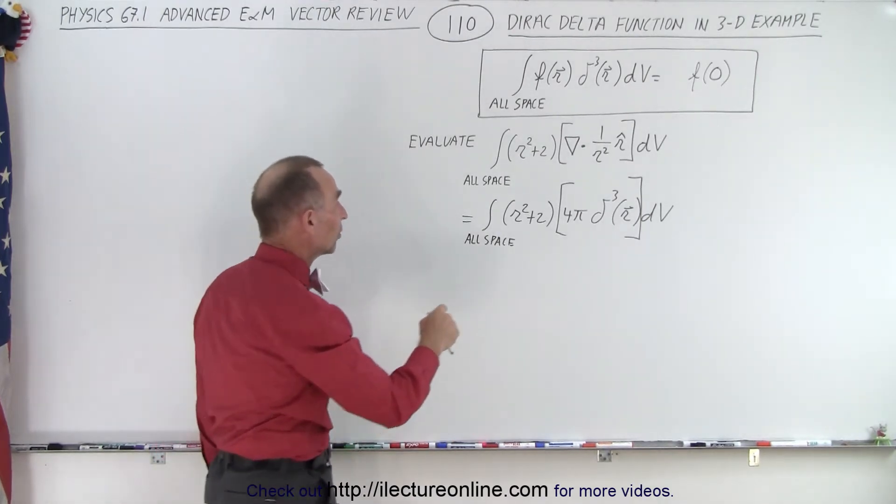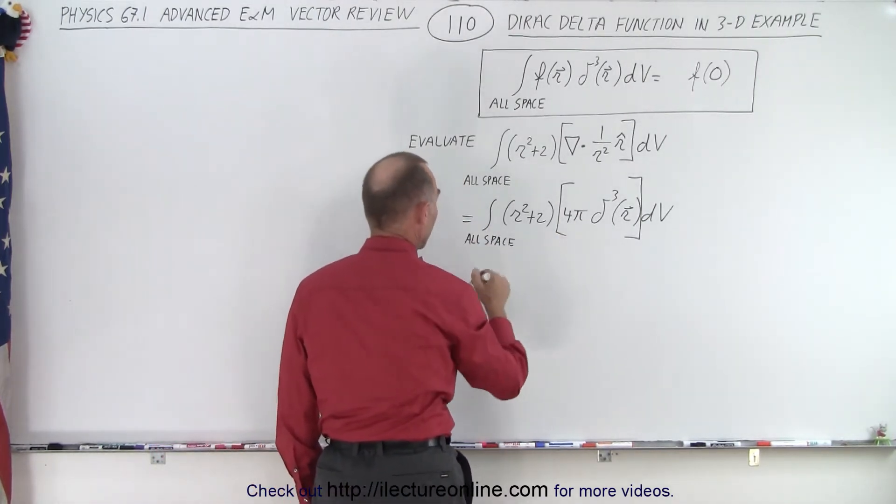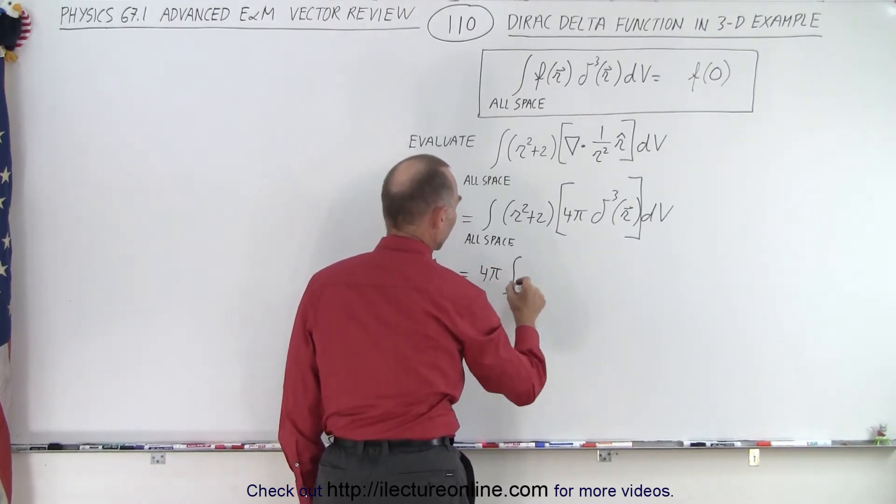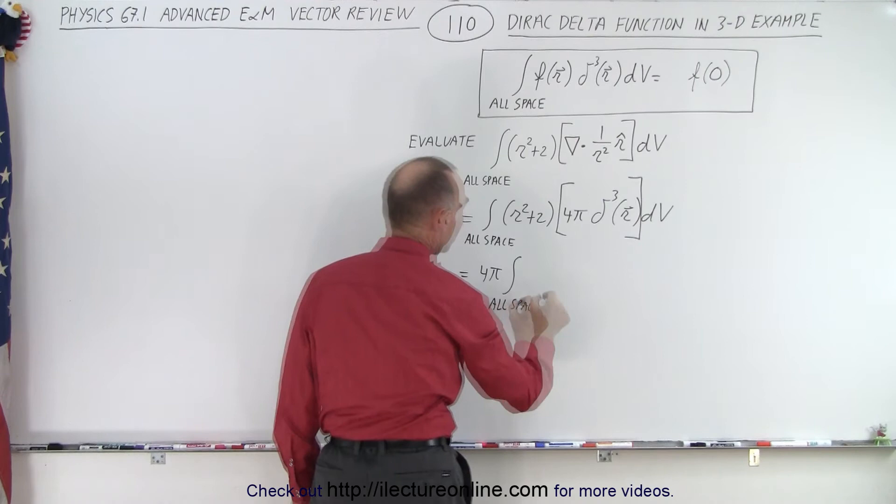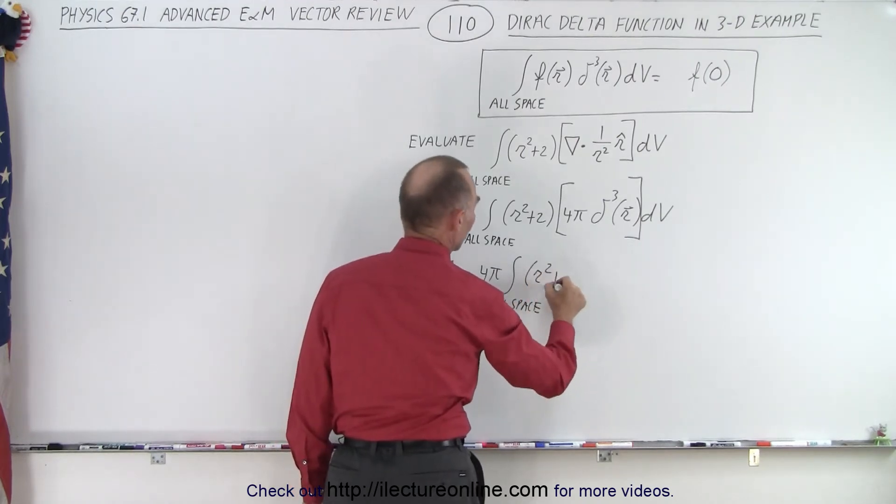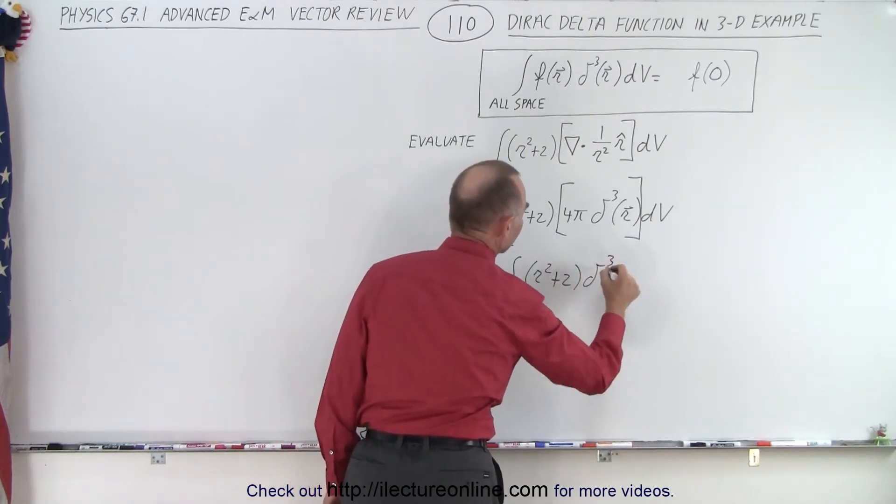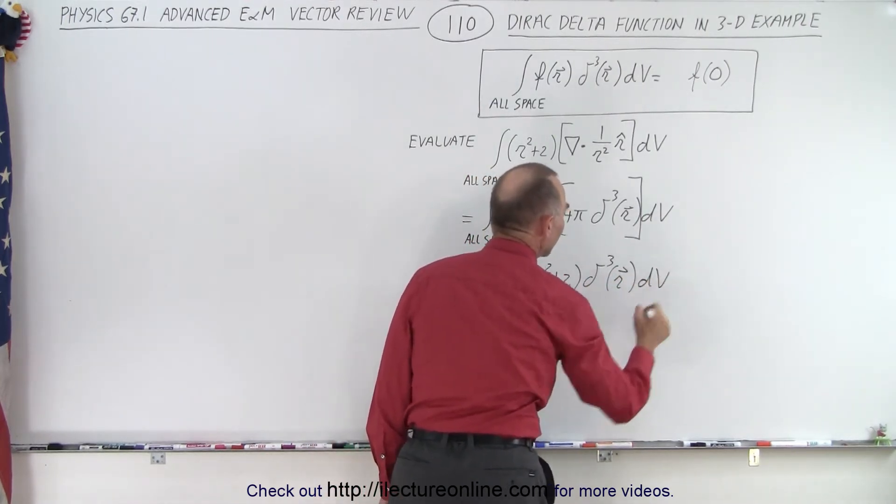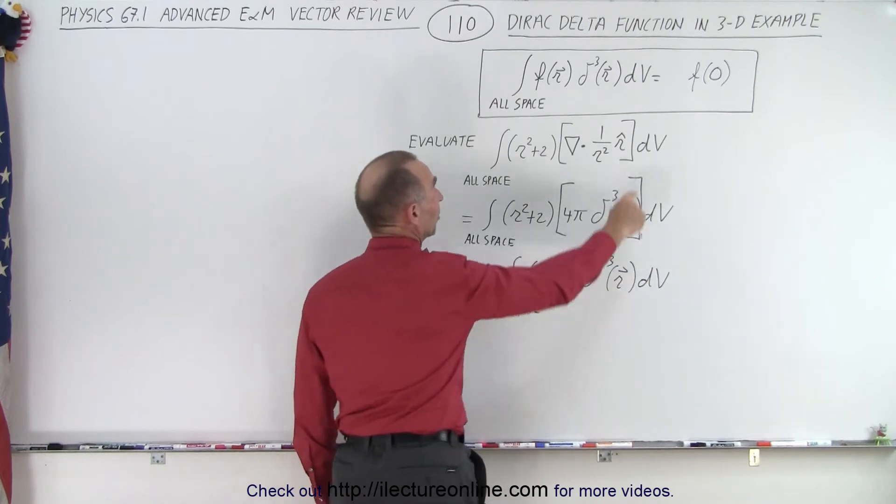Now anything that's a constant can come outside the integral sign. 4π is a constant which can come out, so this is equal to 4π times the integral over all of space times the function r square plus 2 multiplied times the Dirac delta function in three dimensions times dv.